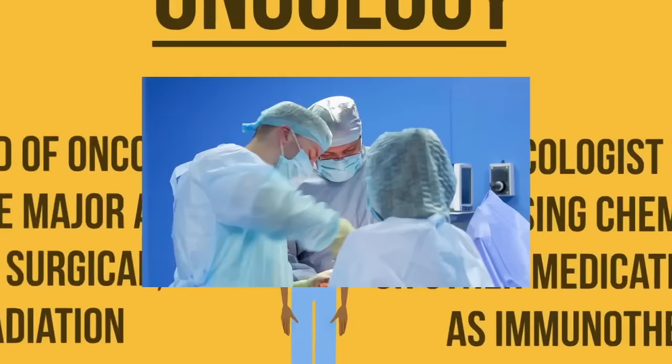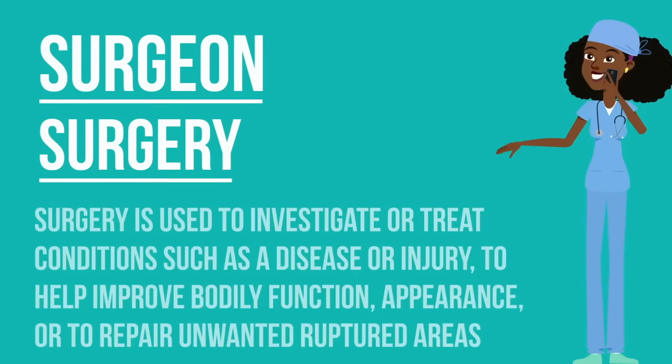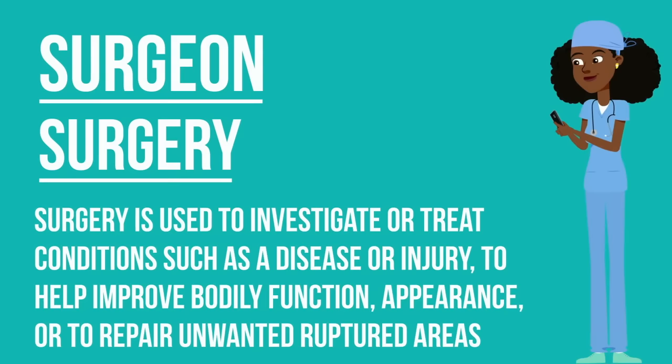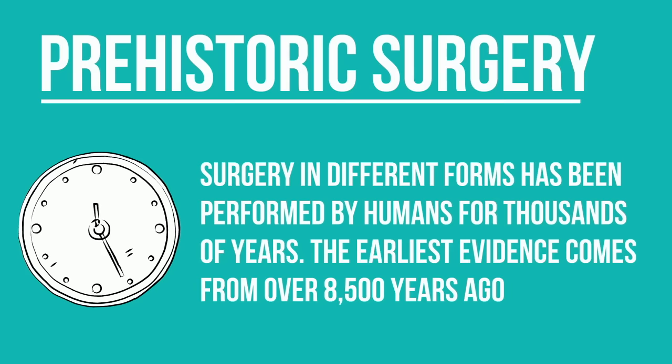Let's move on to our next doctor type: a surgeon. A surgeon works in the area of surgery, which is used to investigate or treat conditions such as disease or injury, to help improve bodily function, appearance, or to repair unwanted ruptured areas. Surgery in different forms has been performed by humans for thousands of years — the earliest evidence comes from over eight and a half thousand years ago.